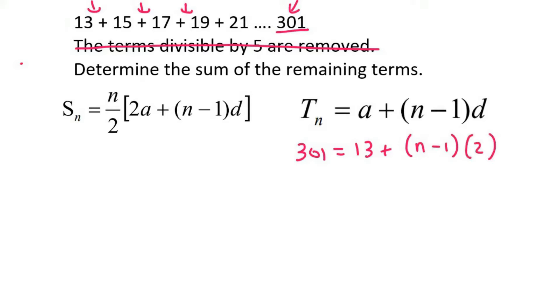Now we can just go ahead and solve this. So I'm going to move the 13 over to the left, which gives me 288, equals to N minus 1 times 2. You can multiply the 2 into the bracket, but I like to rather divide it on the left. So we end up with 144 equals to N minus 1. Solve for N and we get 145. So what that technically means is that 301 is at position 145.